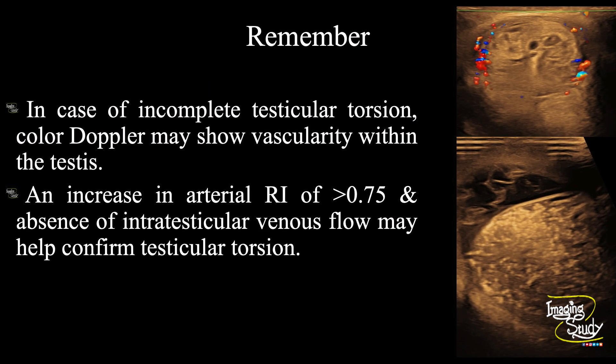Now the take-home message. In case of incomplete testicular torsion, color Doppler may show vascularity within the testicular parenchyma. In that type of case, an increase in arterial resistive index of more than 0.75 and the absence of intratesticular venous flow may help confirm testicular torsion.